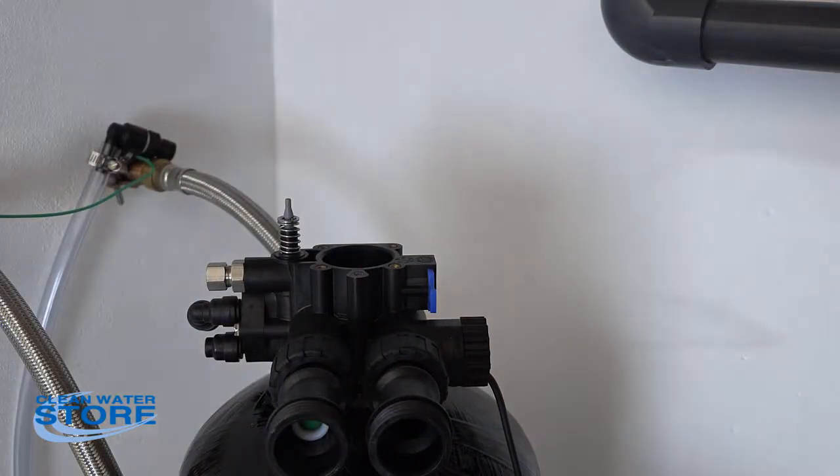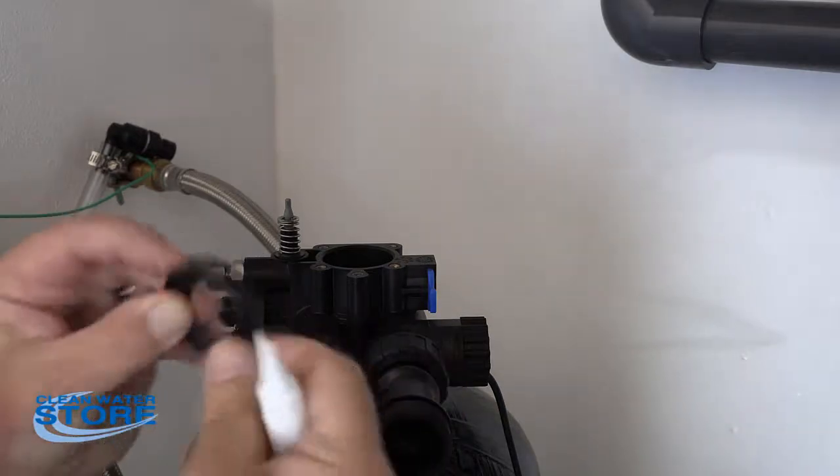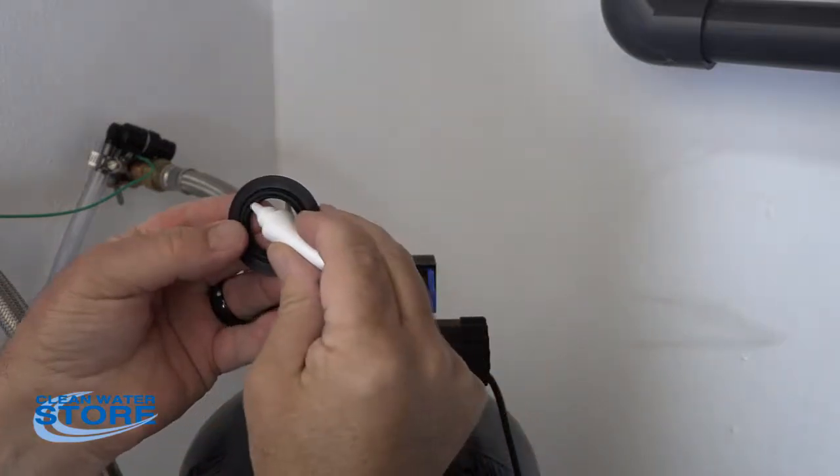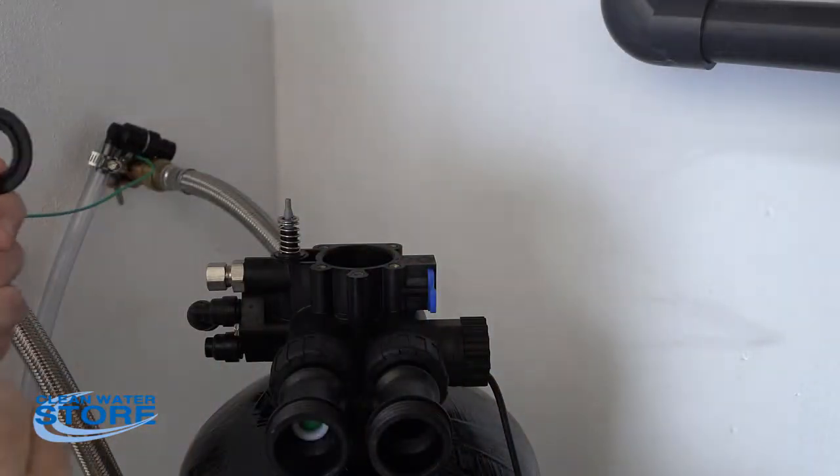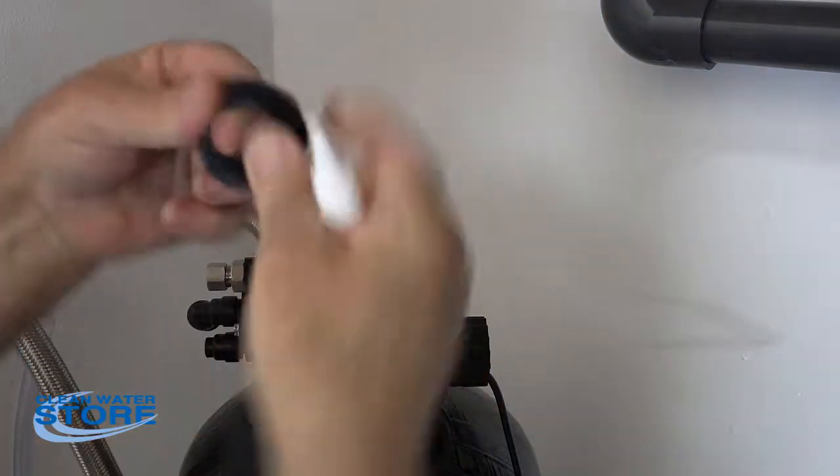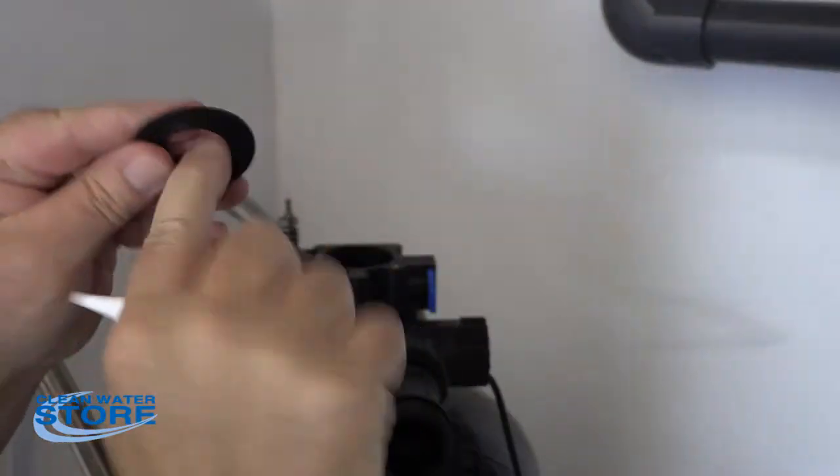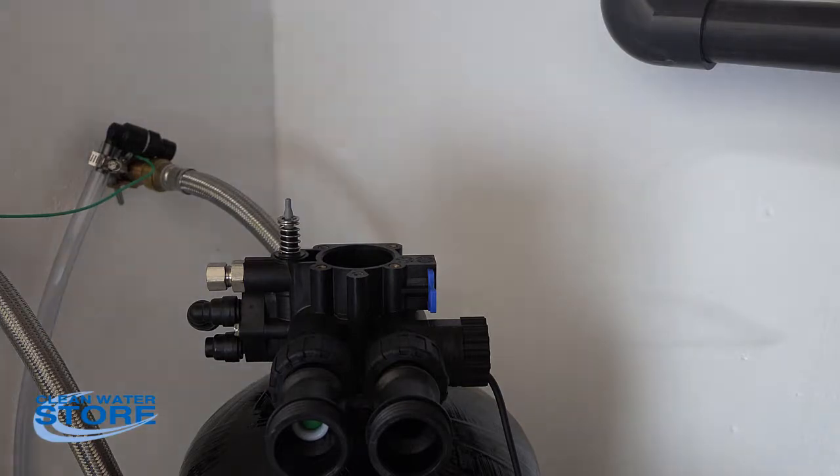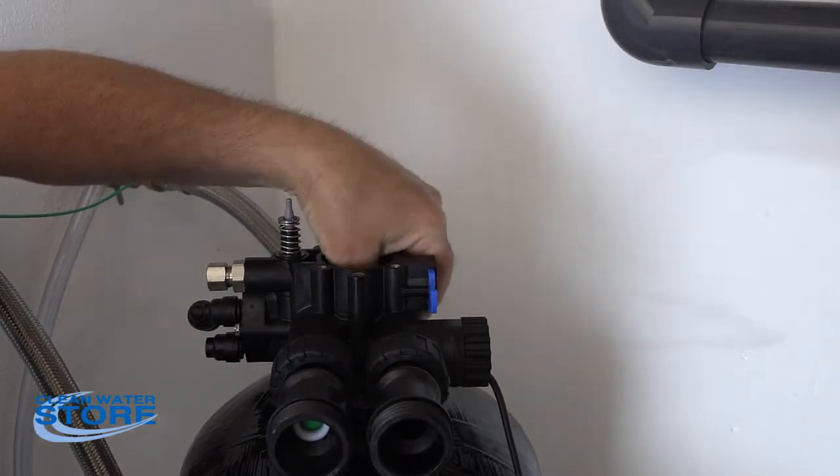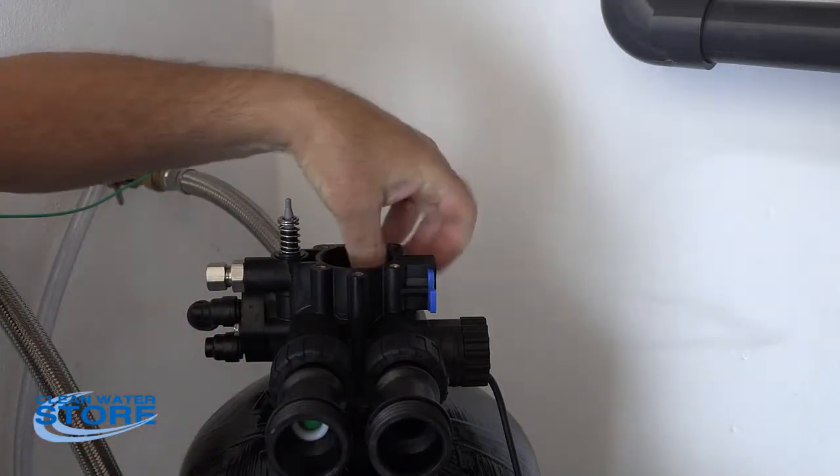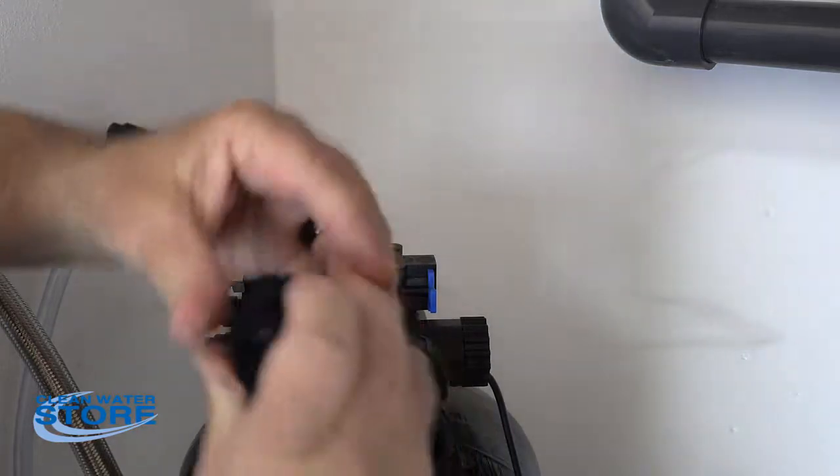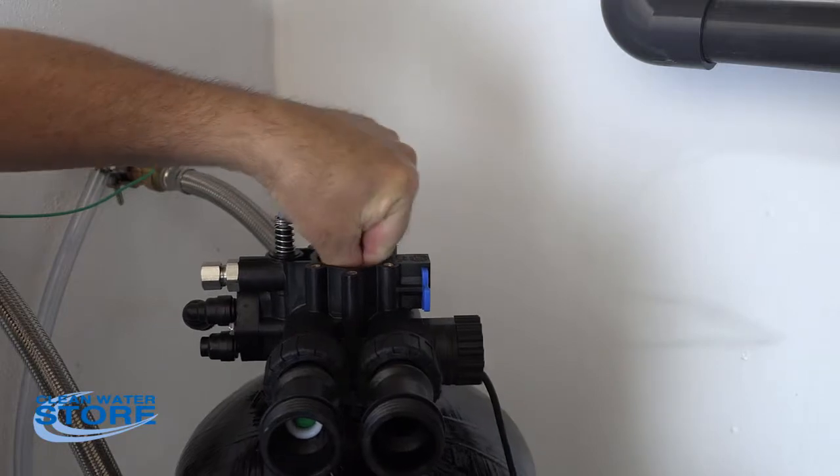Then what you want to do is take your lube and put a little lube on the inside of all of these seals. Just get a little dab on there and run it around with your finger. Just get a nice seal on there. Doesn't need to be out here, just on the inside there where the piston goes back and forth. I pre-lubed all of these before I started.